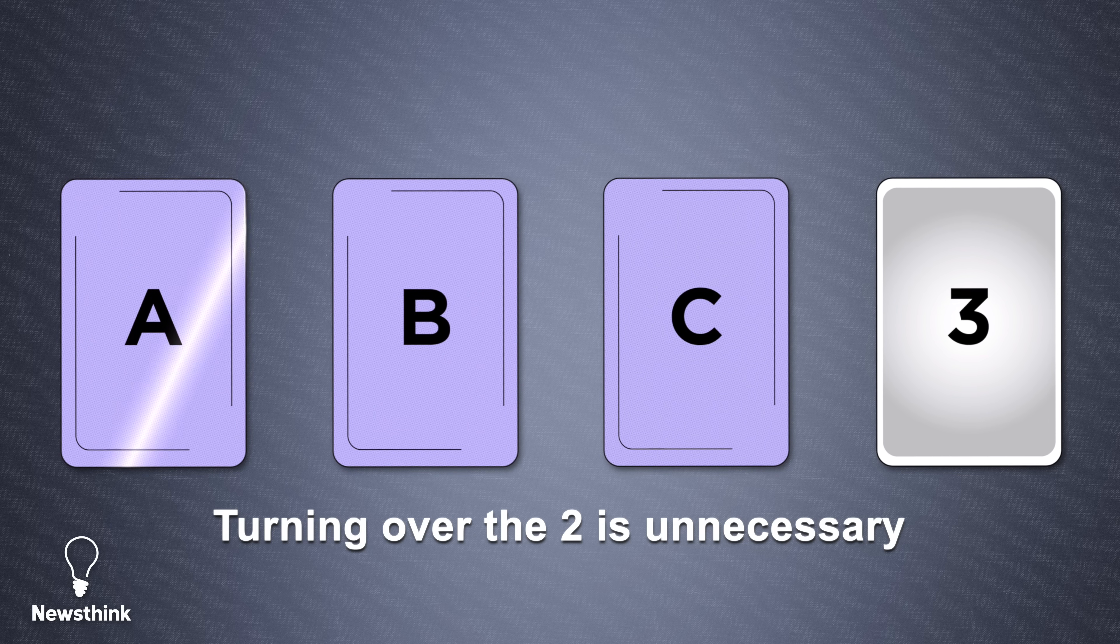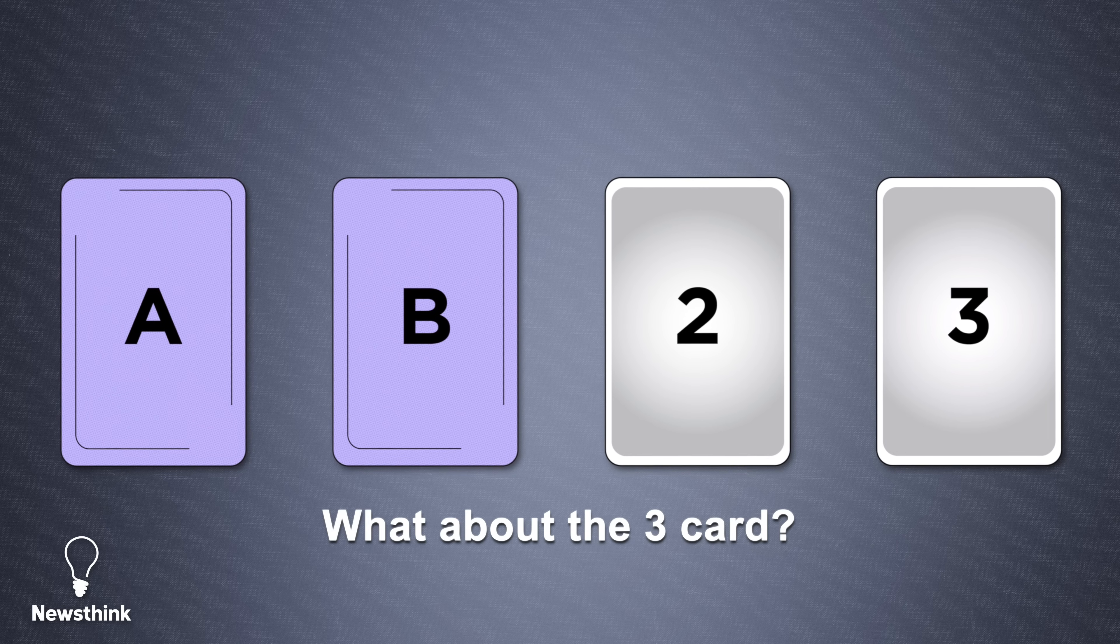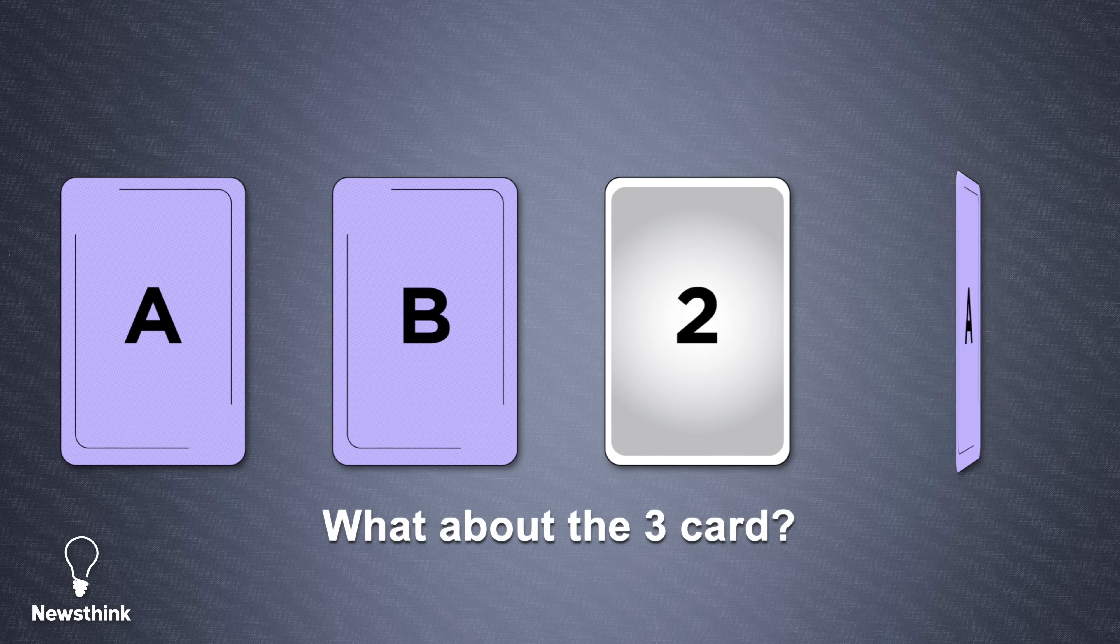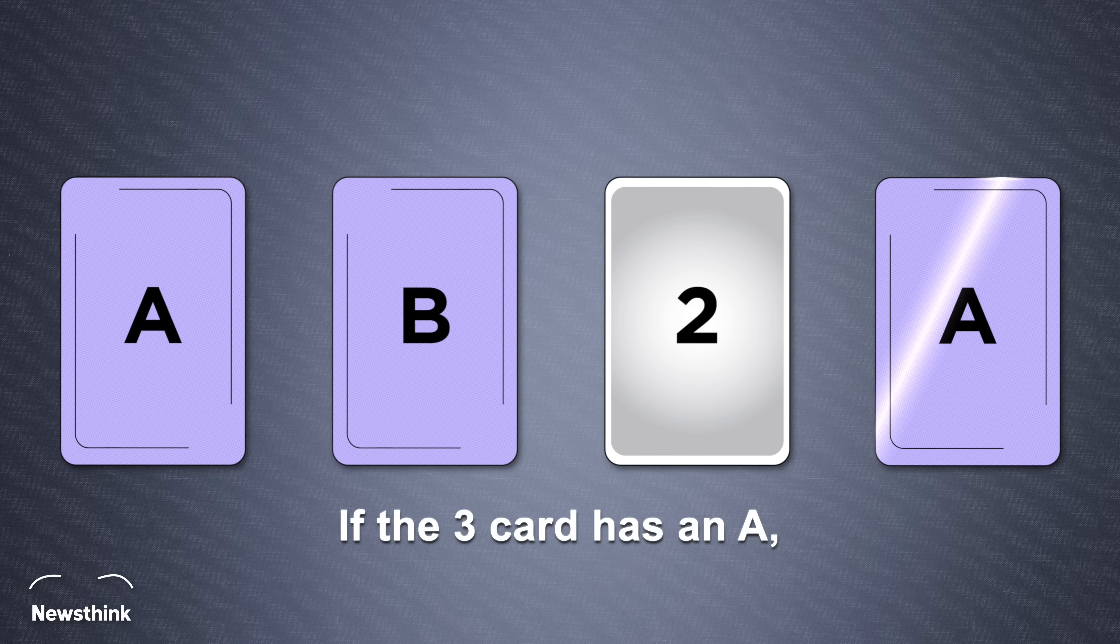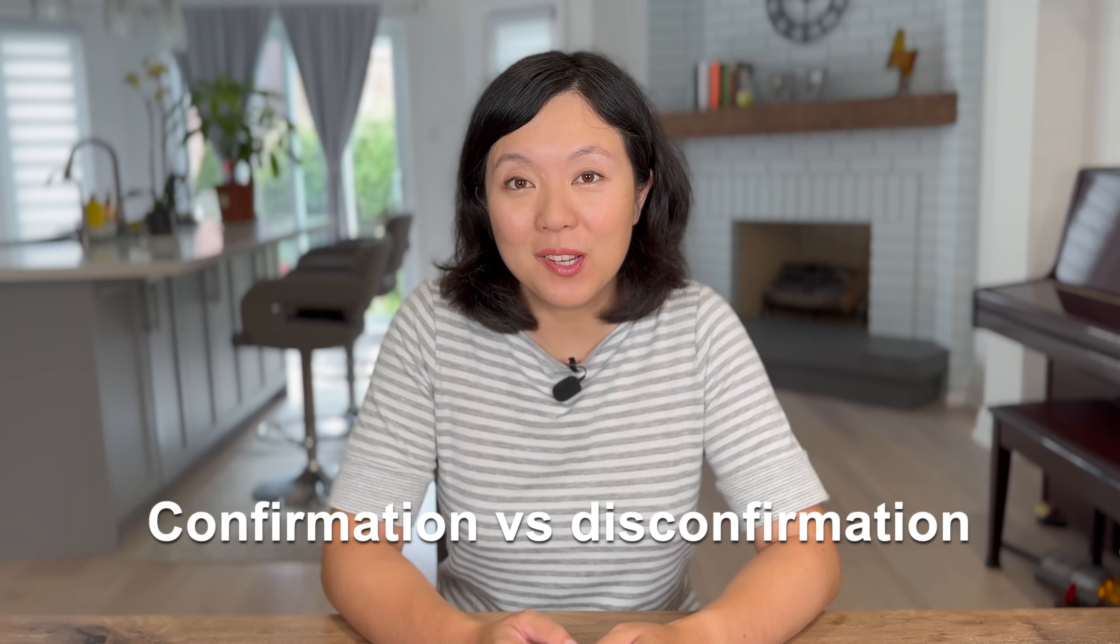It only states that if there's an A, it must have a 2 on the reverse. But what about the 3 card? Flipping over the 3 card is essential because if it has an A on the other side, it would violate the rule.